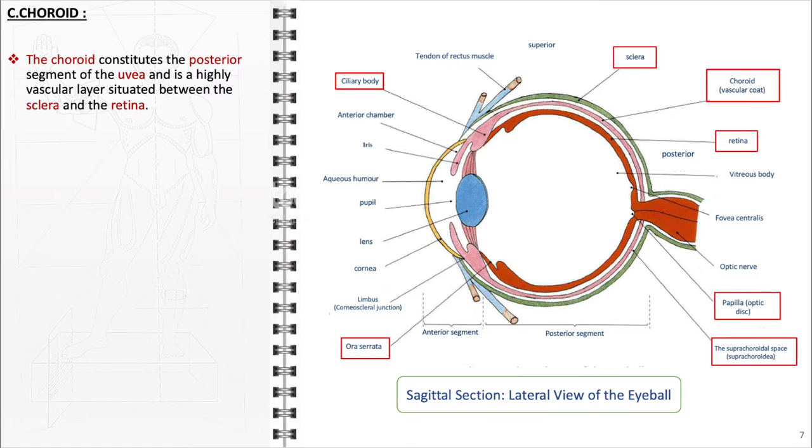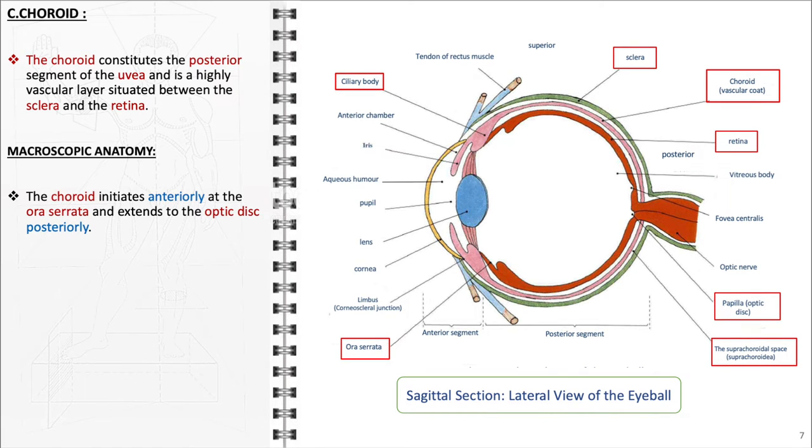Concerning its macroscopic anatomy, the choroid initiates anteriorly at the ora serrata, a serrated junction where the sensitive retina ends, and extends to the optic disc at the back of the eye, where the optic nerve exits the eye.